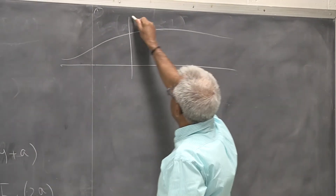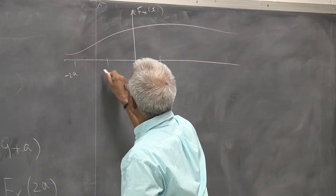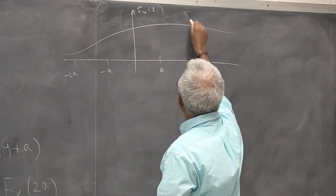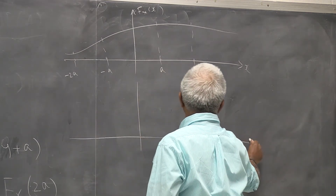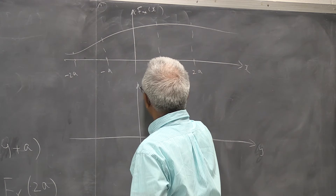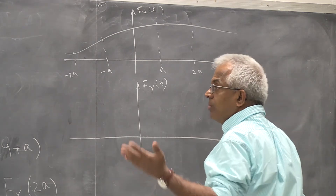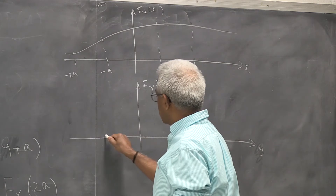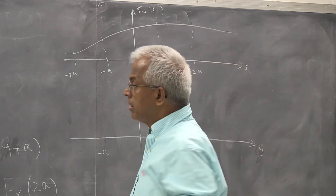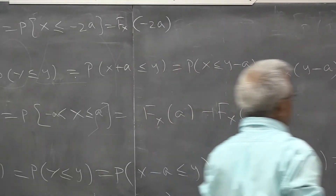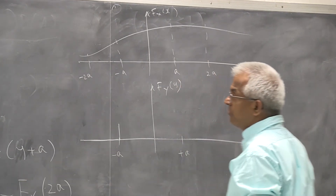So for example, if FX(x) is like this, plotted at minus 2a, minus a, a, and 2a, then for FY(y): first, notice that y only takes values between minus a and plus a. Before minus a, the distribution function is zero. Then there is an impulse at minus a of value FX(minus a).